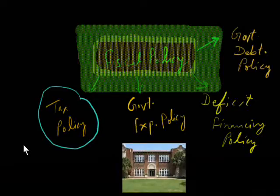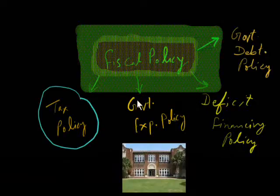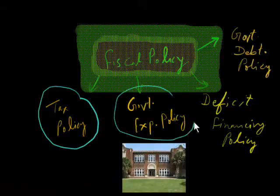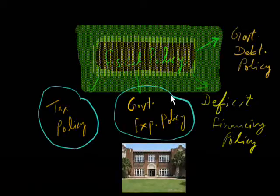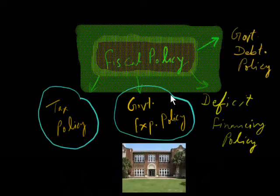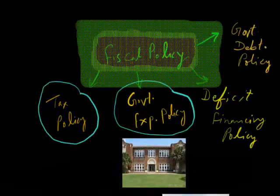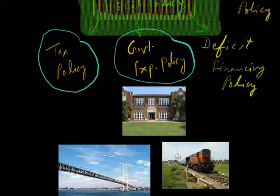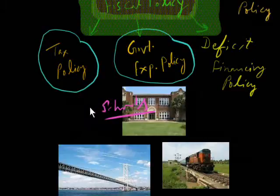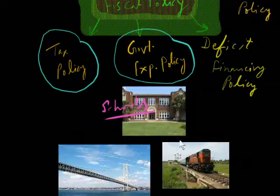When the government collects money under the tax policy, it then makes a plan for spending it. There are many ministries in India — the Railway Ministry, Human Resource Ministry, External Affairs Ministry — and all these ministries make budgets showing expected future expenditures, such as how many schools will be opened, how many bridges will be started, and how many new rail projects will be launched.